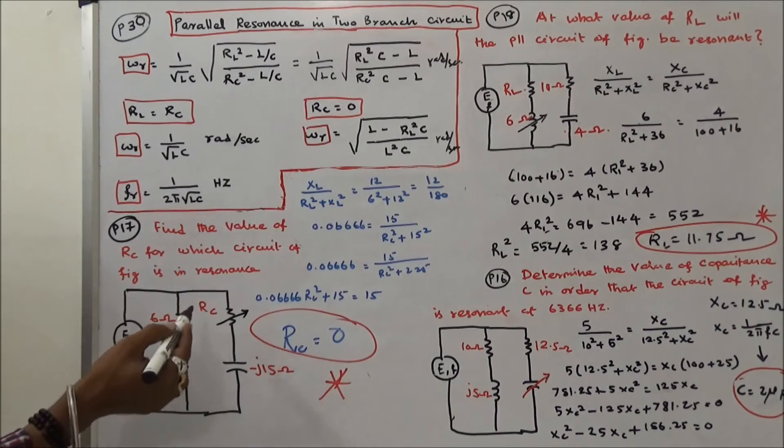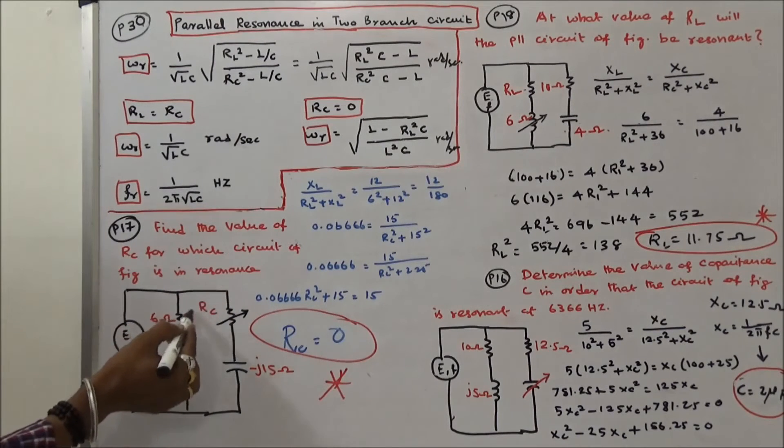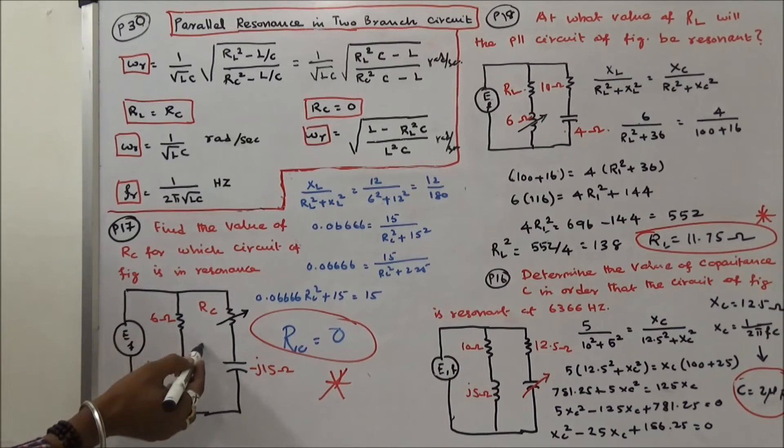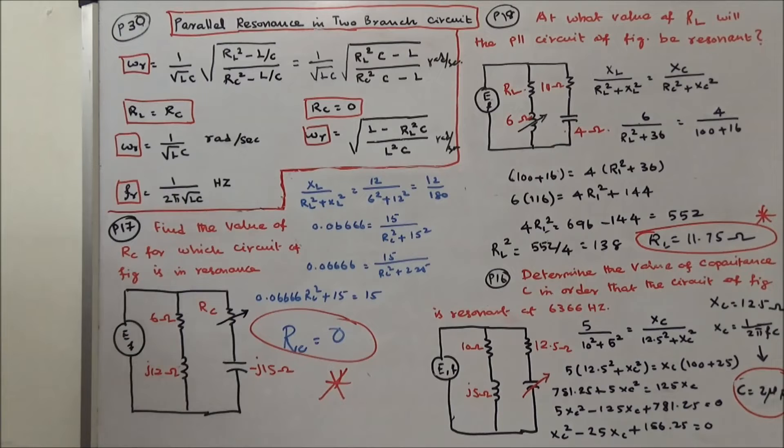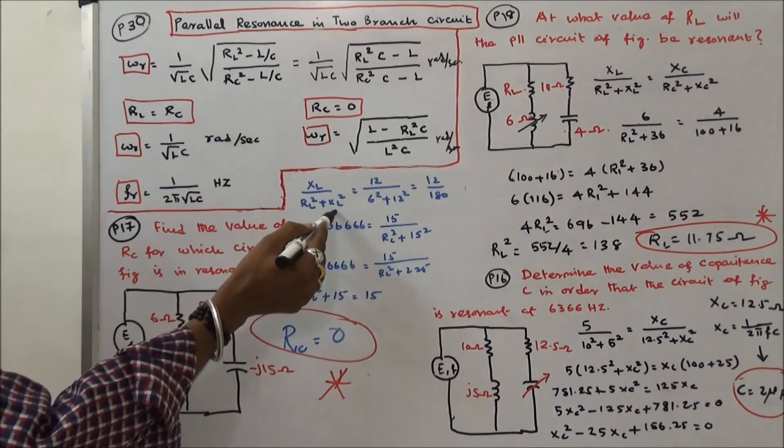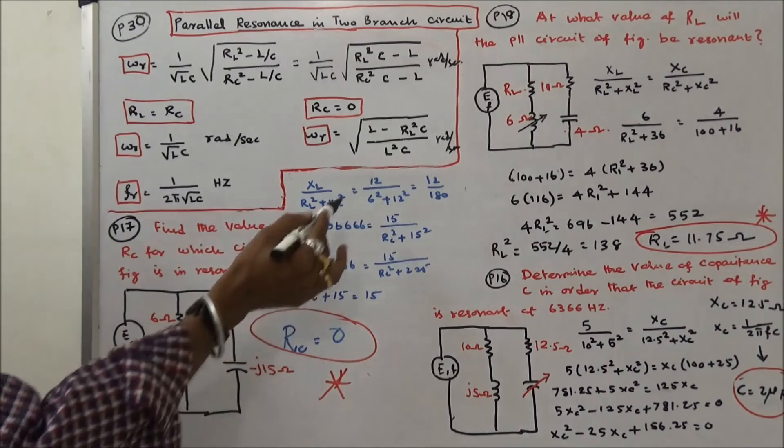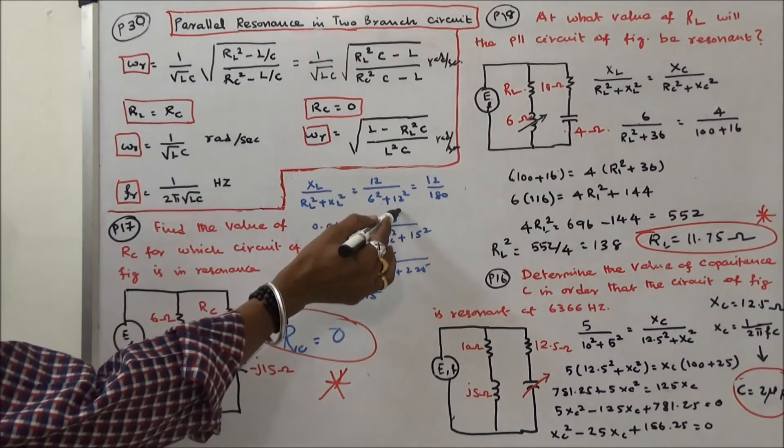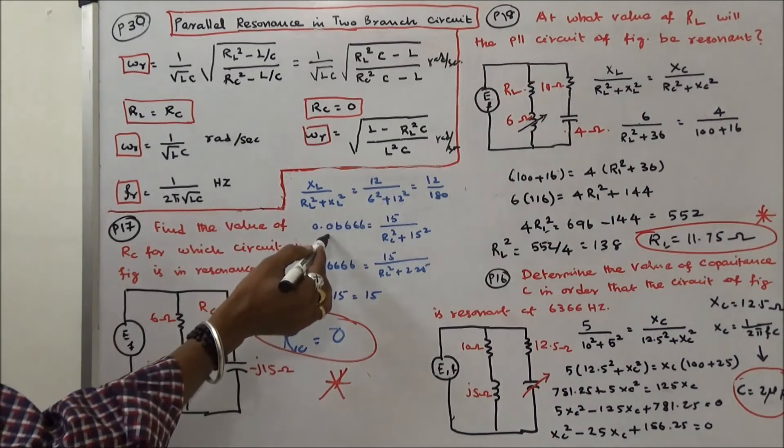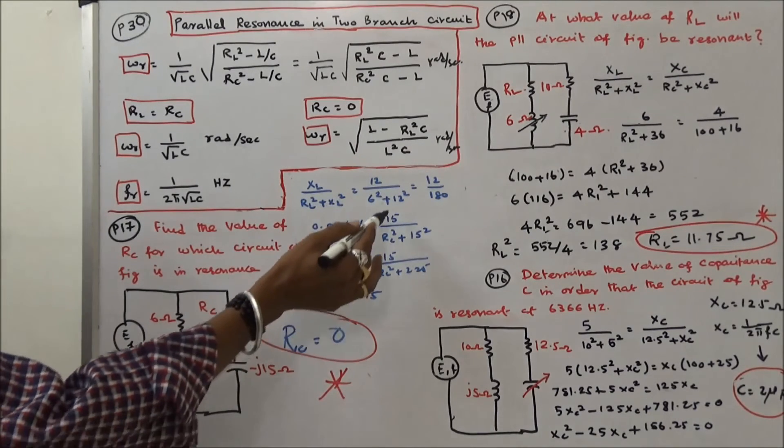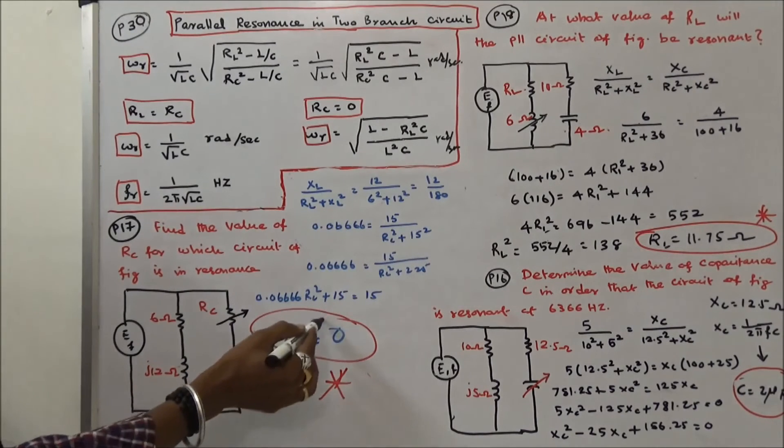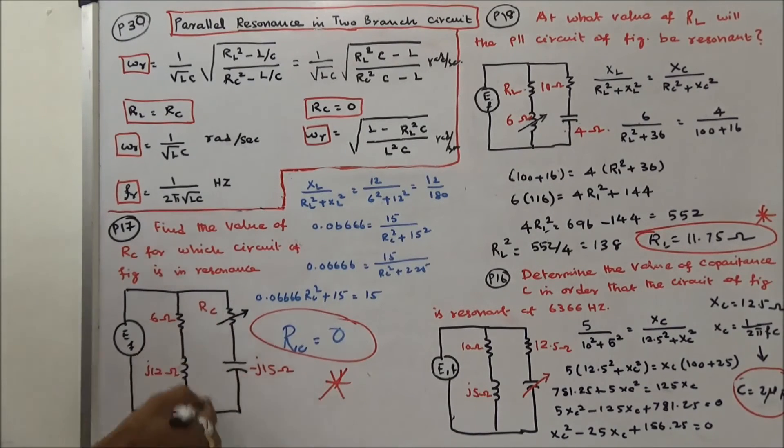Fourth problem, find the value of Rc for which circuit of figure is in resonance. At resonance condition, we know that Xl by R square plus Xl square is equal to 12 by 6 square plus 12 square is equal to 12 by 180, 0.06666, that is equal to 15 by R square plus 15 square. So, Rc value should be 0. Then the circuit will resonate.